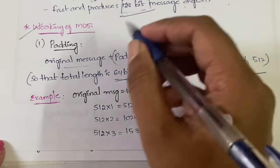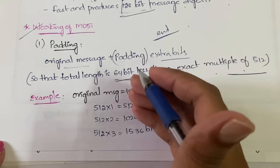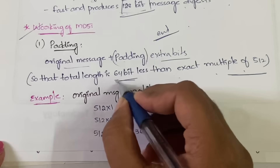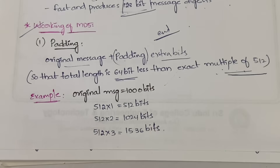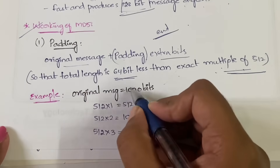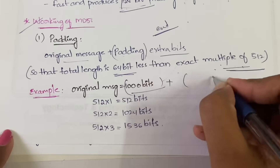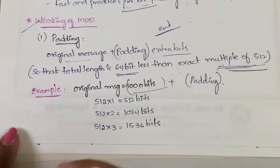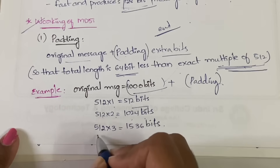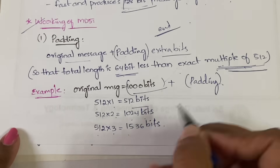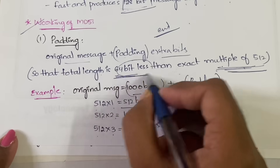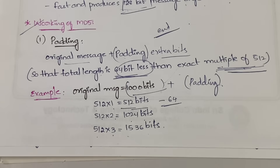When you add extra bits at the end, the total length has to become 64 bits less than an exact multiple of 512. The multiples of 512 are: 512, 1024, 1536, and so on. You subtract 64 from the appropriate multiple to find the target total length.